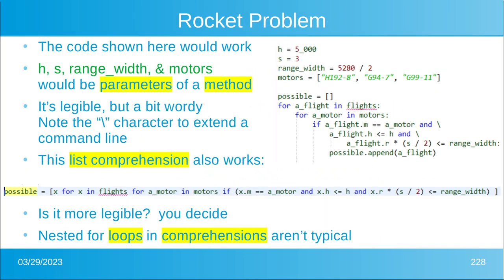So the rocket problem, the code that you see there would work. H equals 5,000. That was our ceiling. S equals three. That's our wind speed and so on and so forth. And then we would have two nested loops for flight in flights and then for each motor in motors. Now you're going to check that the flight is adequate for your particular parameters. Now that works. It works perfect. Well, the list comprehension that you see just underneath that example will also work. So is it more legible? Well, that's up to you. But nested loops aren't really that typical.